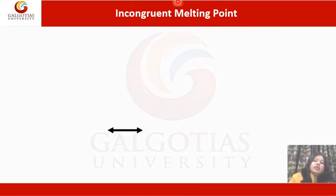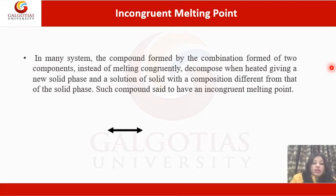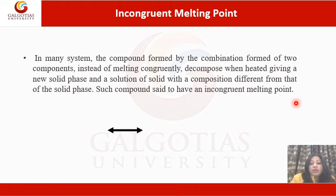Now, what is incongruent melting point? In many systems, the compound formed by the combination of two components, instead of melting congruently, decomposes when heated, giving a new solid phase and a solution with a composition different from that of the solid phase. Such a compound is said to have an incongruent melting point.